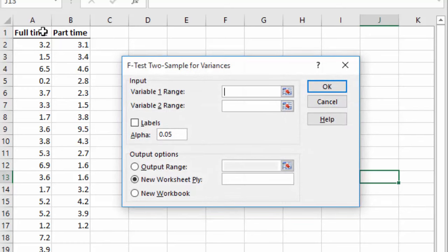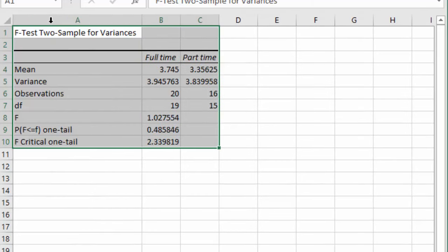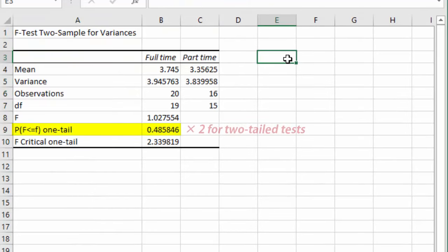Select full-time for variable 1, part-time for variable 2, check labels, and click OK. The 1-tailed p-value here is usually multiplied by 2 to obtain a 2-tailed p-value, and it is large enough to tell us there is no significant difference in population variances. That aside, we can also see here that the variances are very close, so we conduct an Equal Variances t-test.